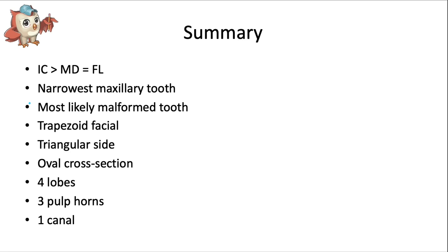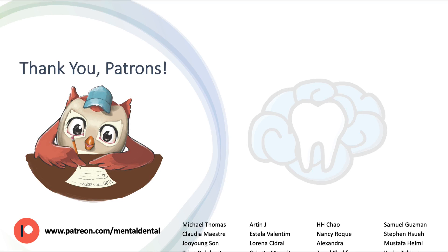To summarize this tooth: the incisocervical dimension is greater than the mesiodistal dimension, which is equal to the faciolingual dimension. It's the most narrow maxillary tooth and the most likely malformed tooth. It looks trapezoidal from the facial view, triangular from the side view, and oval from the root cross-section. It's usually made up of four lobes, three pulp horns, and one canal.